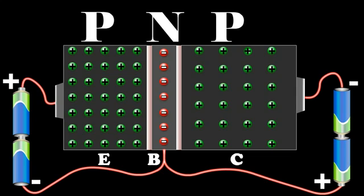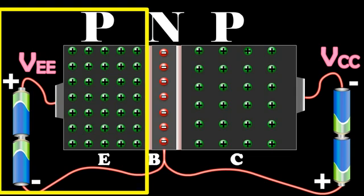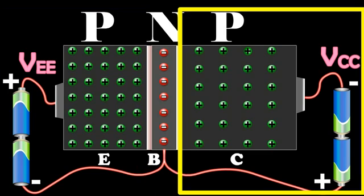The external biasing of the junction is provided by the batteries VEE and VCC as shown in the diagram. The emitter-base junction is forward biased and the collector-base junction is reverse biased.